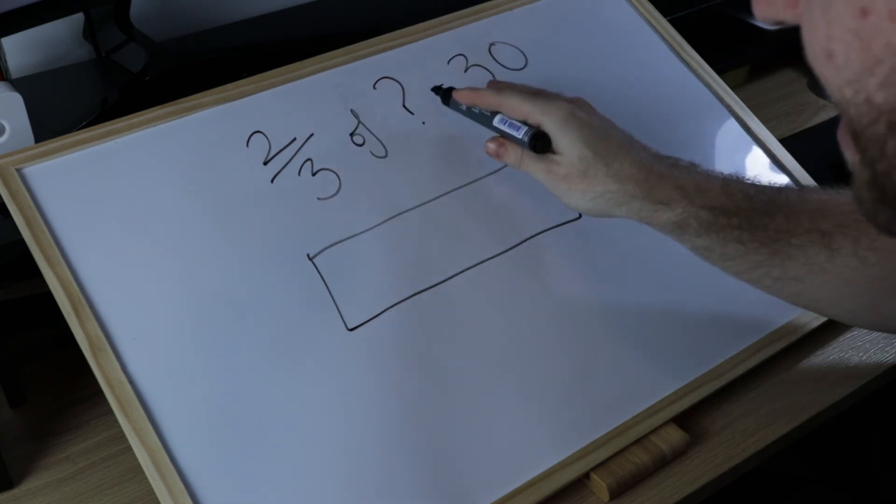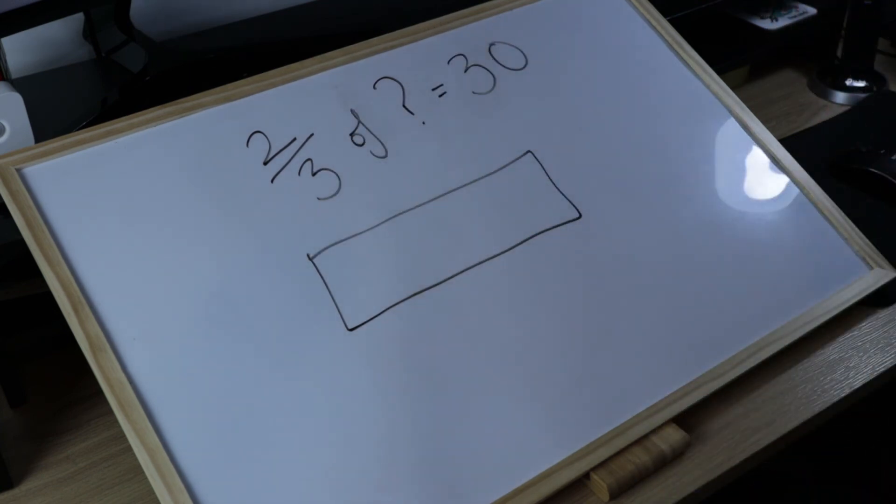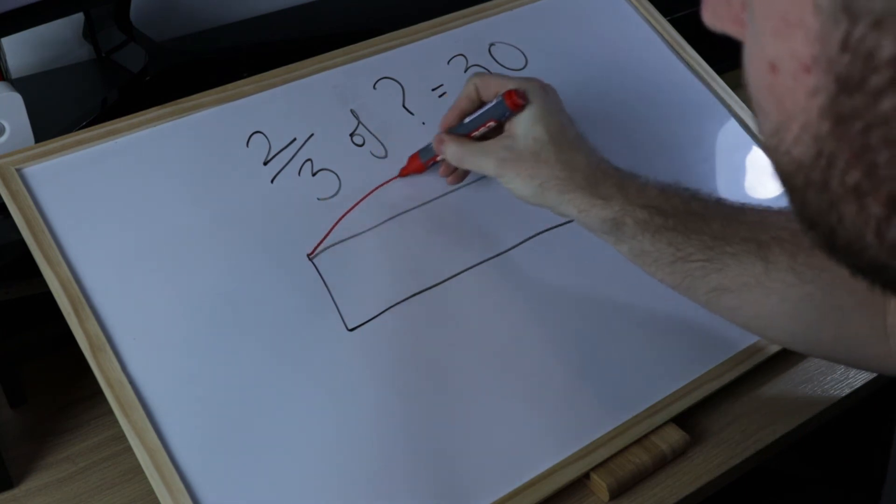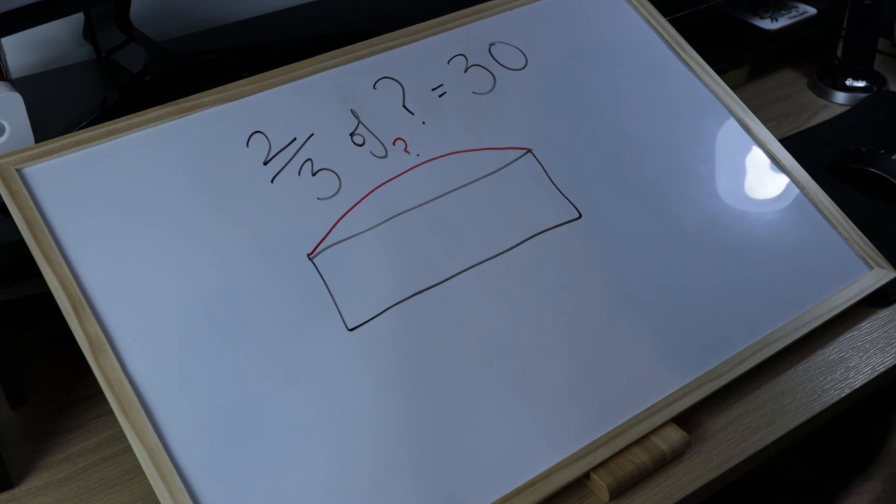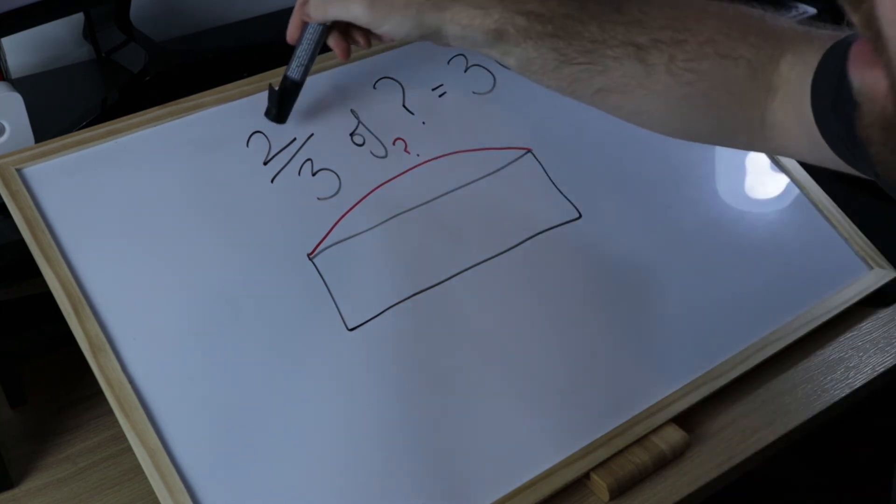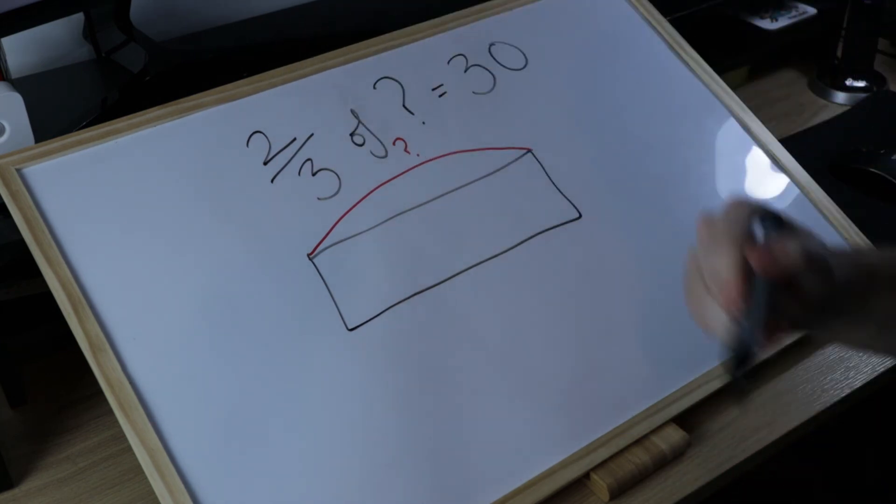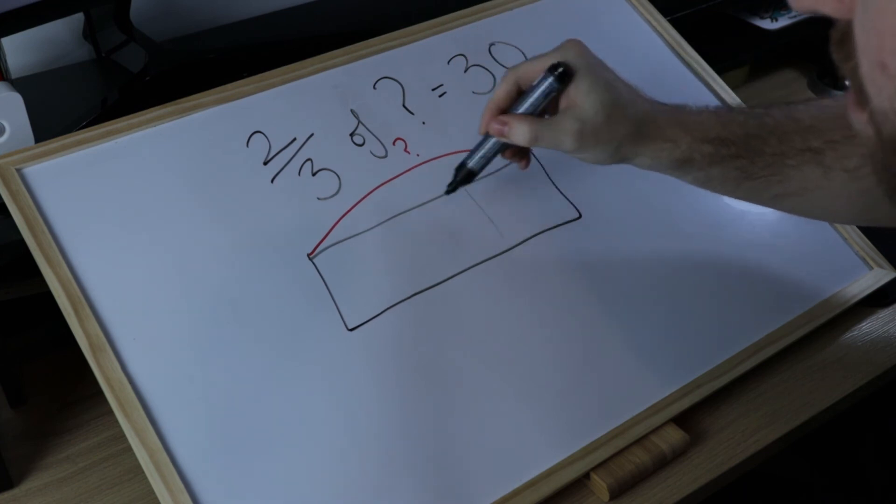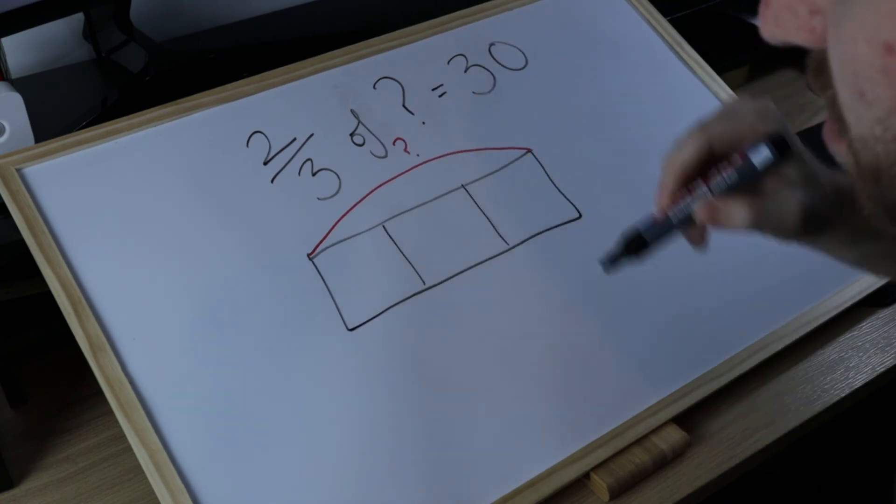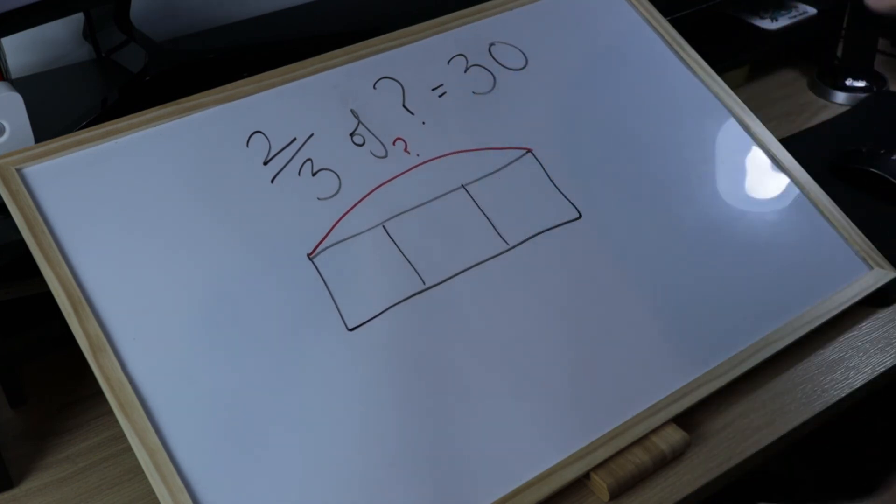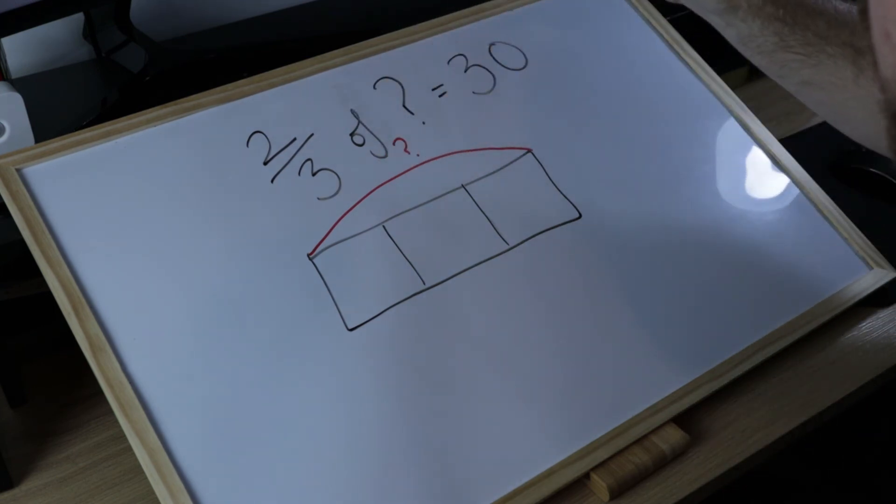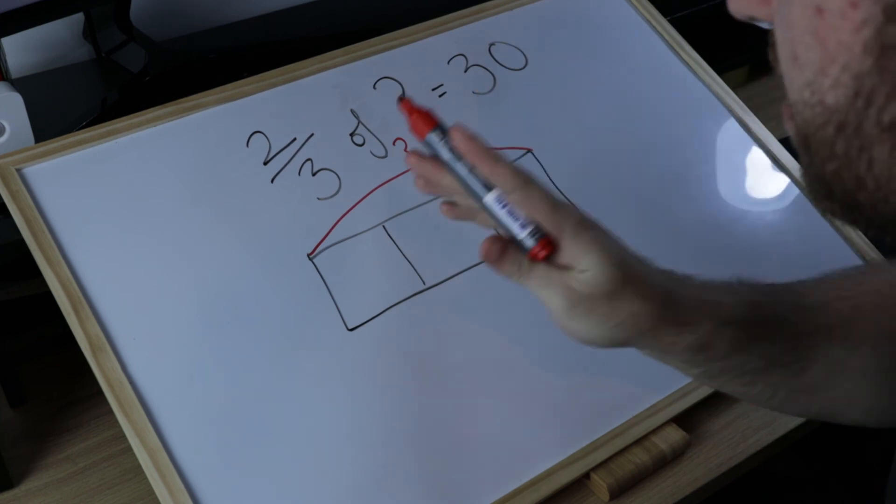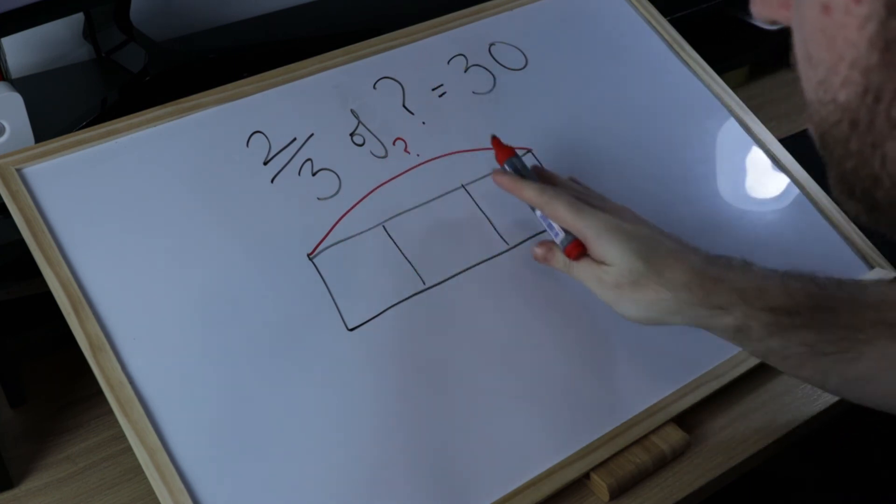Let's draw in our bars. We have two-thirds of blank. Now in this situation we are not given the quantity, we do not know the total. It is a question mark, it is what we're trying to solve for. We are however still given the fraction two-thirds. Three is the denominator, so I split it into three equal parts, and I know that two-thirds of whatever this total is must be 30.